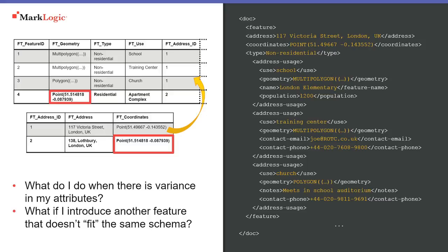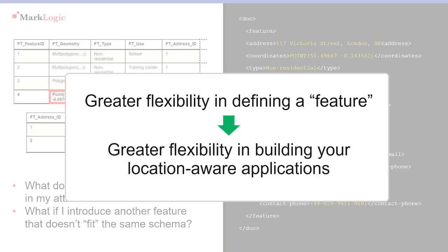So modeling features within MarkLogic gives you more flexibility, and that's significant because if you have greater flexibility in defining a feature, you generally have greater flexibility in being able to build location-based applications. So maybe I build an application which is based on just that core data to start with, then I get a new requirement which requires me to integrate new attributes in there. With MarkLogic, it's faster and quicker to build that additional functionality into the application without much, if any, change at the data model level.